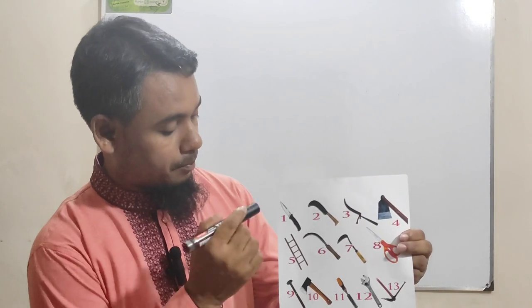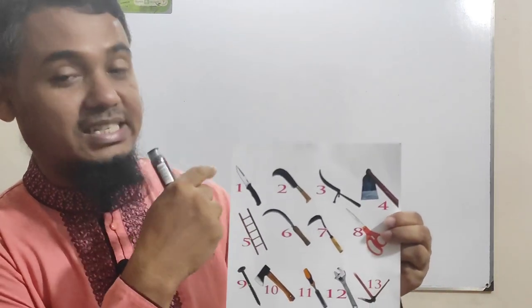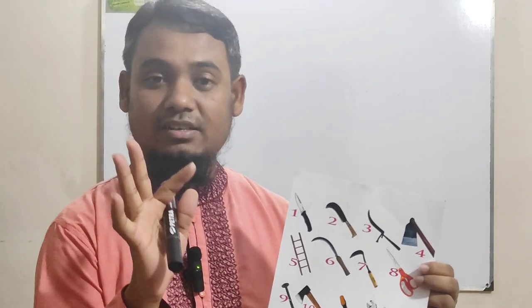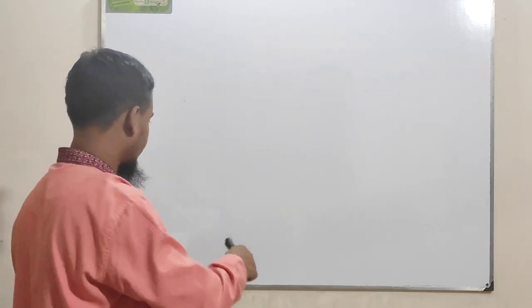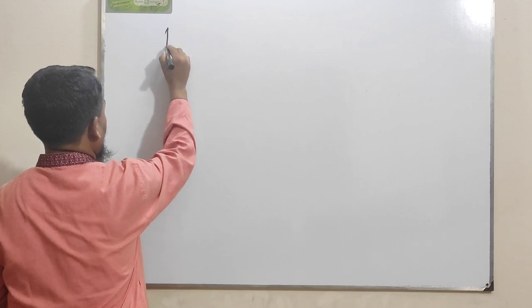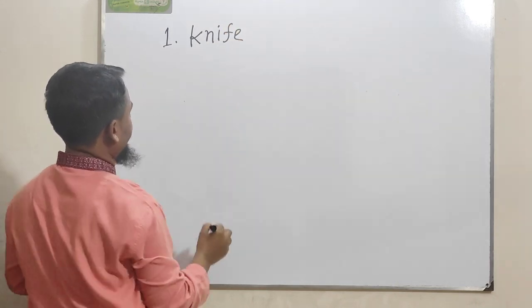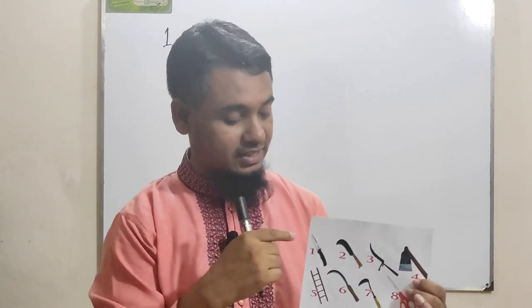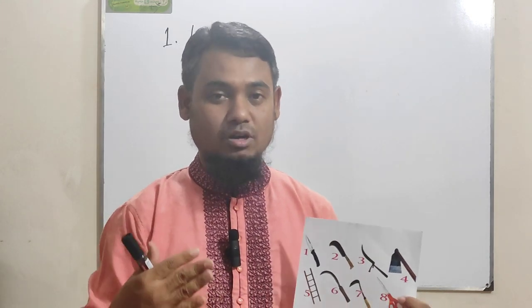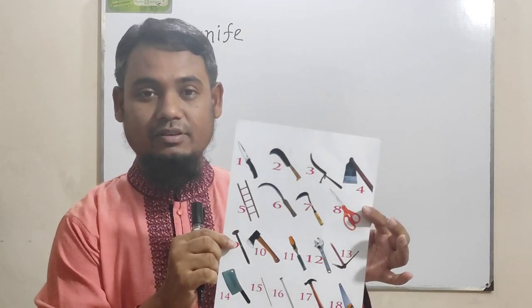Picture number one is knife. The spelling is a little bit different — knife. It is used to cut different fruits and in some cases it is used to cut vegetables, so it is a very much needed tool in our home. Picture number one is knife.